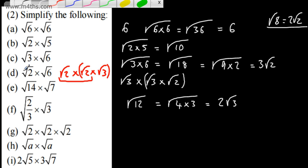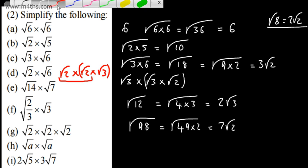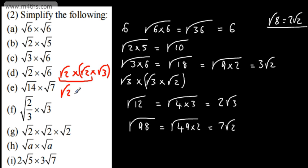For the next one, we could write this as the root of 7 times by 14. So, 7 times 14 gives us 98. We could spot that this is 2 lots of 49, so 49 times 2, which gives us 7 root 2. Alternatively, we could spot this as the root of 2 times root of 7 multiplied by root of 7, which gives us 7, and we'd have 7 root 2.